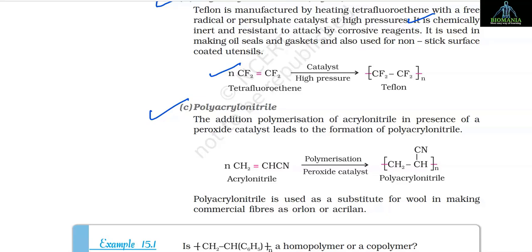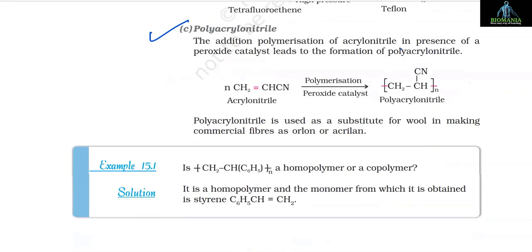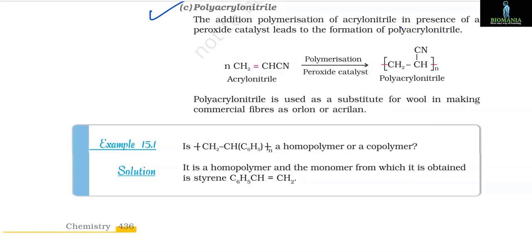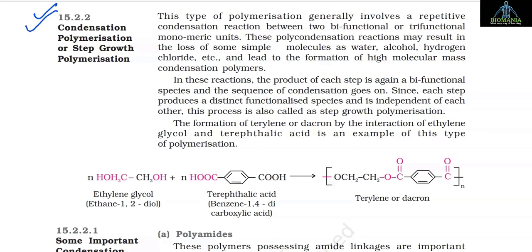C. Polyacrylonitrile: The addition polymerization of acrylonitrile in the presence of a peroxide catalyst leads to the formation of polyacrylonitrile. nCH₂=CH–CN (acrylonitrile) → (–CH₂–CH(CN)–)ₙ (polyacrylonitrile). Polyacrylonitrile is used as a substitute for wool in making commercial fibres such as orlon or acrilan.